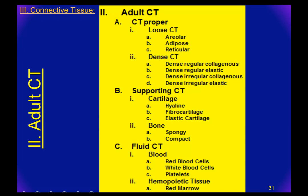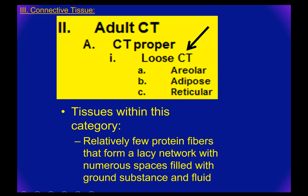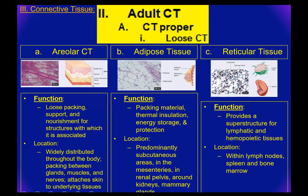Now let's talk adult connective tissue, starting with connective tissue proper. We'll begin with the loose connective tissues, which include areolar, adipose, and reticular. In the loose connective tissue category, you've got few proteins forming a lacy network with a lot of space in between filled with ground substance and fluid.